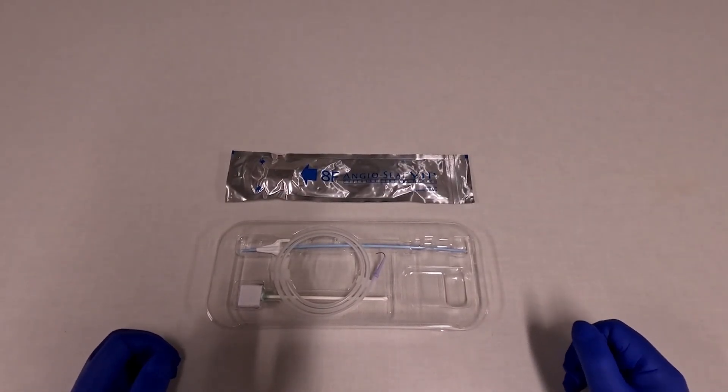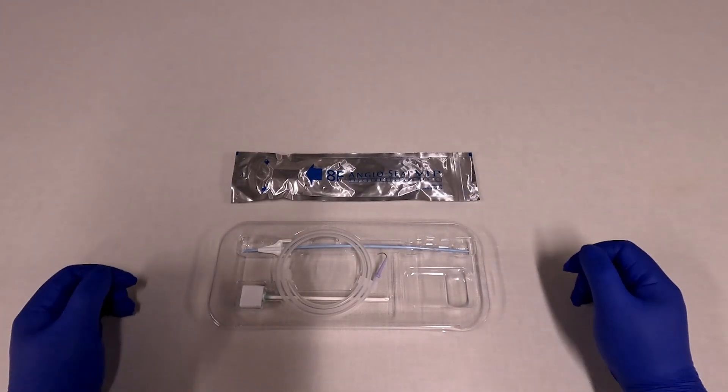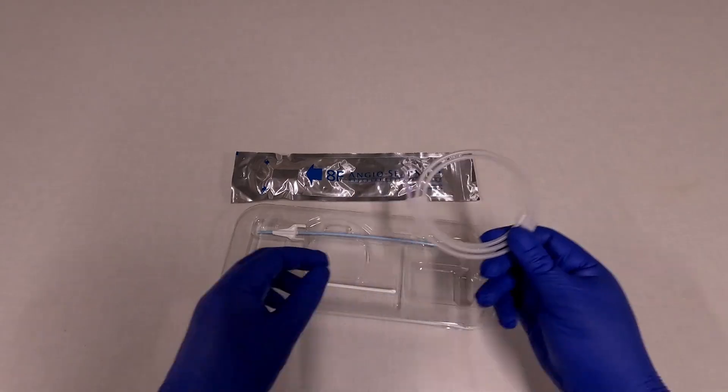Here we are going to go over the deployment of the AngioSeal closure device. When you open the package you can see it comes with two separate components. It comes with a short exchange wire.